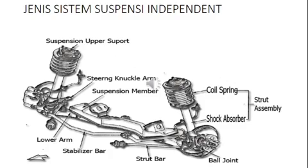Gambar yang kedua ini masih termasuk jenis suspensi independen, yang tipenya adalah MacPherson Strut. Bagian-bagiannya atau komponennya hampir sama dengan yang wishbone pegas coil. Cuma di sini ada perbedaannya, sayap bawah atau lower arm konstruksinya lebih kecil dibandingkan dengan yang modelnya wishbone pegas coil. Komponen di antaranya ada suspensi upper support, kemudian ada suspensi member.